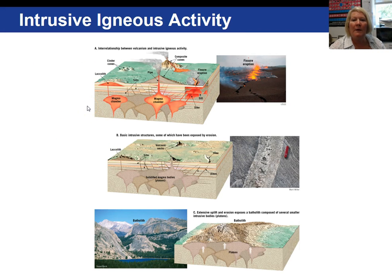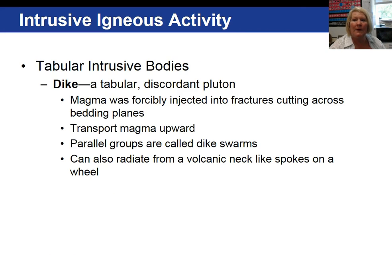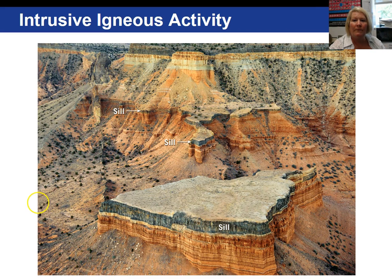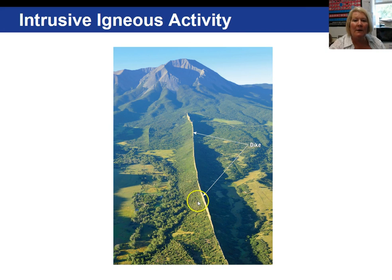This diagram shows a variety of plutons: a laccolith, dikes, and sills. When smaller magma chambers called stocks solidify into a large magma body, that is a batholith. A dike is an example of a tabular, discordant intrusive igneous body — it cuts through existing rock layers. A sill, on the other hand, is a tabular, concordant pluton that runs parallel with existing strata. Here is an image of a sill going parallel with the rock layers, and here is a picture of a dike cutting through them.